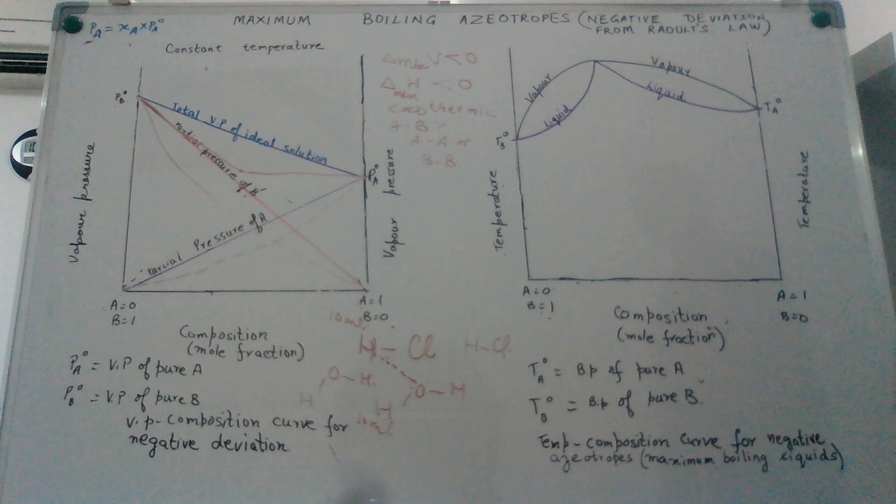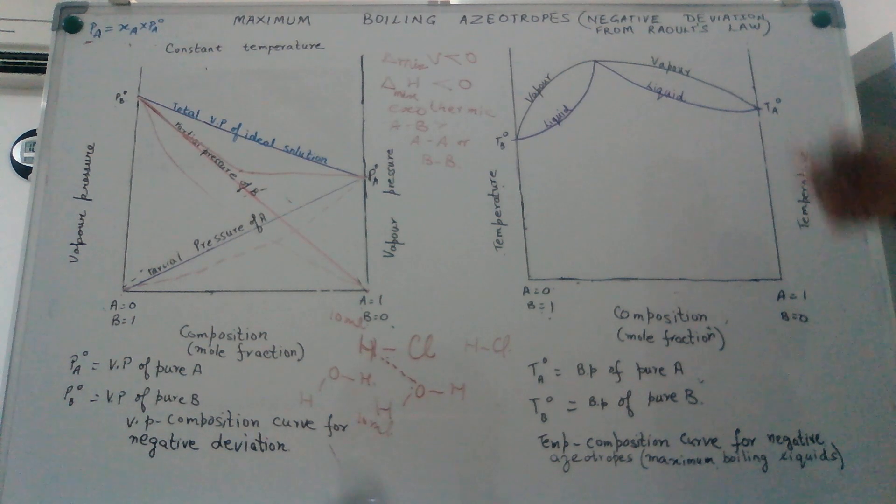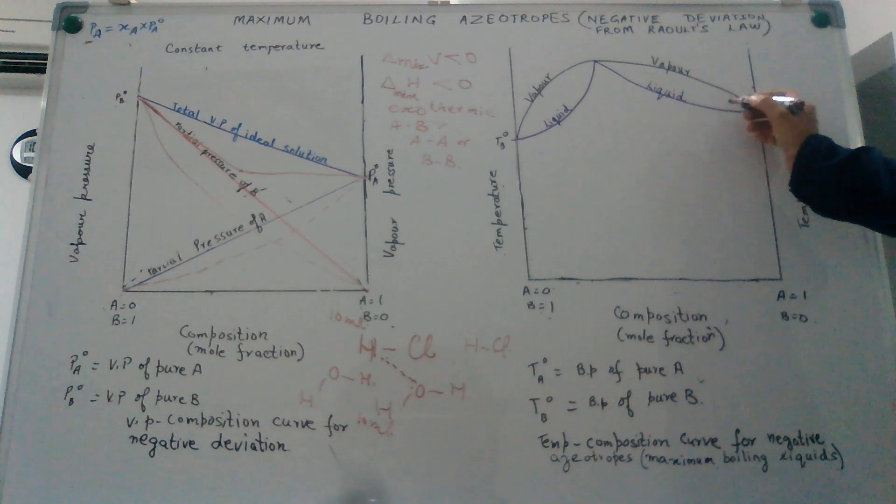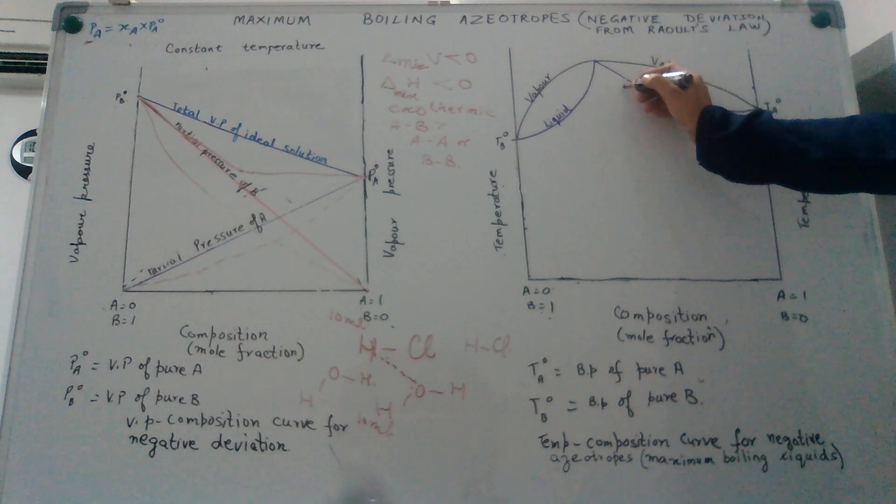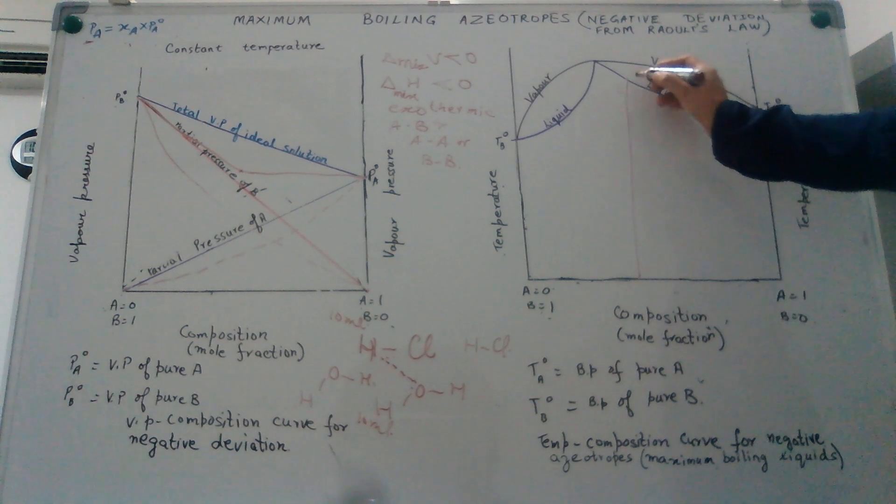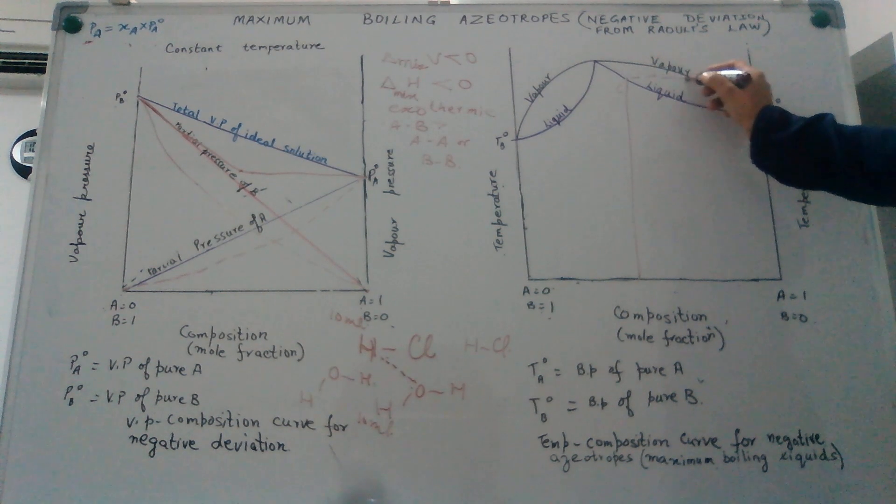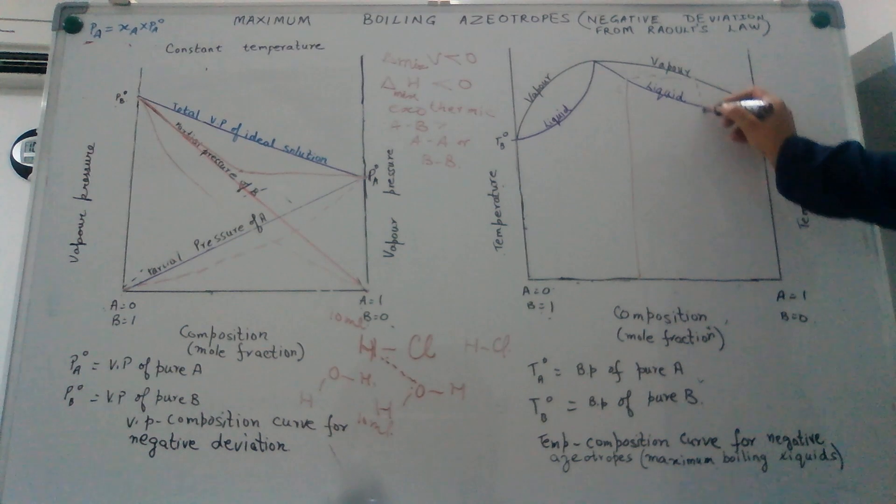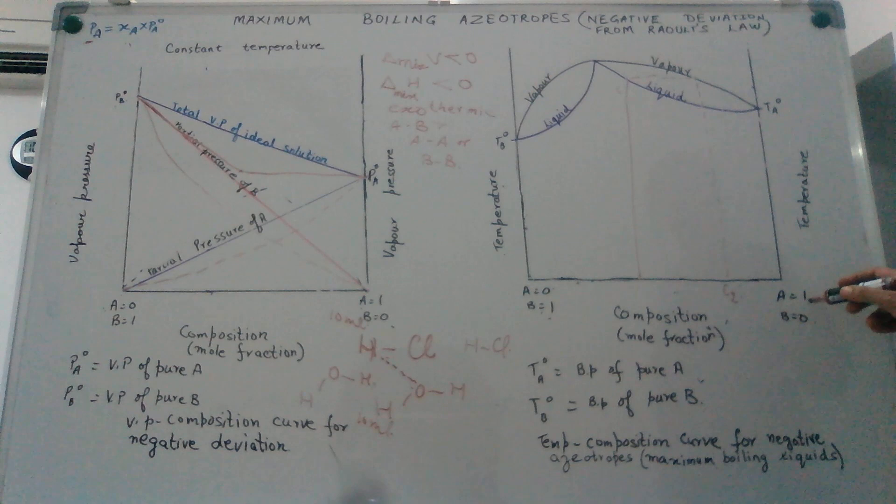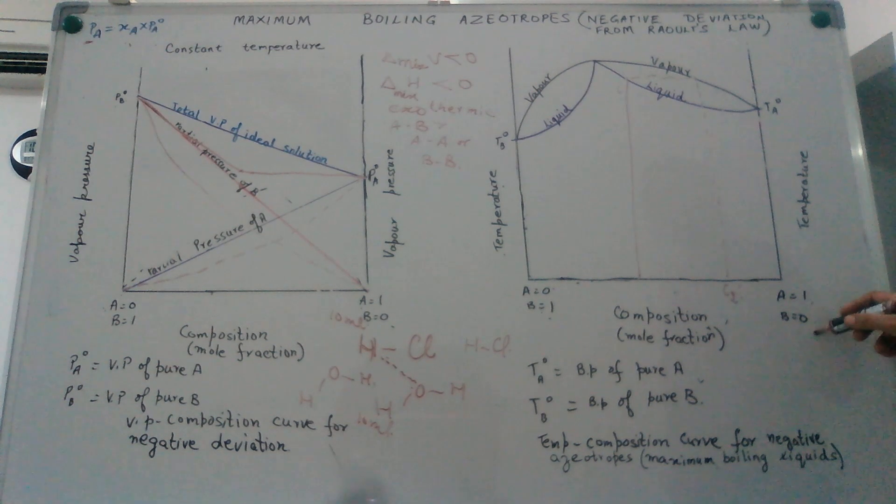Let us see how we can separate such type of liquid mixtures. Here, if we start with a solution having the composition C1, when we heat such a solution and it reaches its boiling point, we notice that the vapor tends towards the composition C2 where the concentration of A is much higher than that of B.